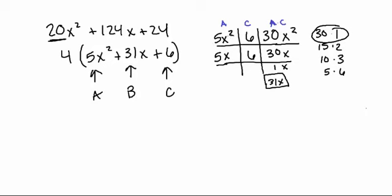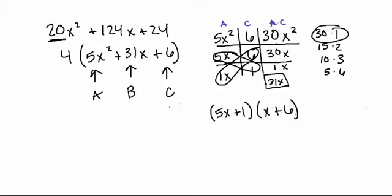Now we need to fill in the remaining boxes, making sure everything multiplies up and down and left to right. We need factors of 5x squared, so we'll put 5x and 1x. Then we need factors of 6, which in this case is 6 times 1. We notice they also multiply going across: 5x times 6 is 30x and 1x times 1 is 1x. We've now filled out the tic-tac-toe table. We circle the terms diagonally, giving us the two factors: 5x plus 1 and x plus 6. Don't forget the 4 out front, so the result is 4 times (5x plus 1) times (x plus 6).